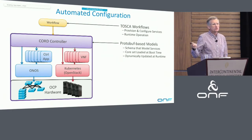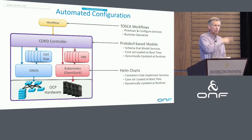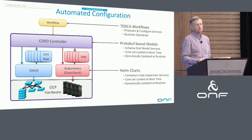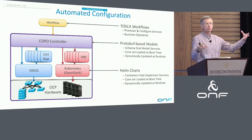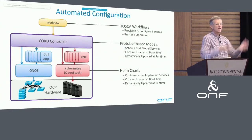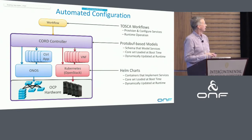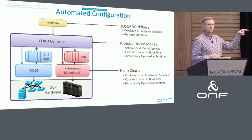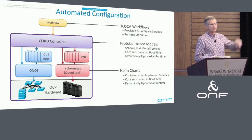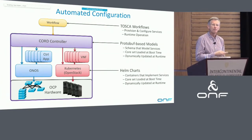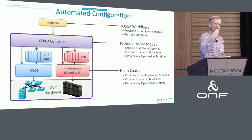Models don't do anything — they're just there for control and configuration. What really runs underneath the covers is a set of containers running the actual pieces of the system. In the next release of CORD, you say here's a Helm chart — which is just a fancy way of saying here is the workflow to talk to Kubernetes to bring up some containers to run XOS, and to bring up these other containers to run Voltha, and bring up these other containers to run ONOS. These are the containers that actually implement the services that the protobufs model. A core set are loaded at boot time, then I start adding others over time and can dynamically load them at runtime.